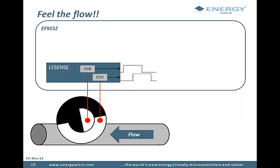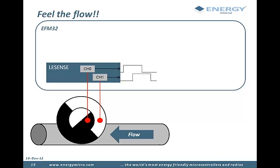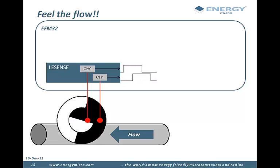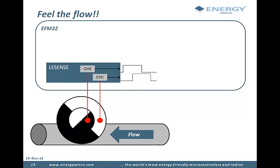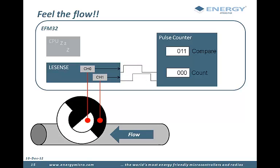The true or false value is then sent out on the peripheral reflex system. In the other end of the PRS channels, the EFM32 pulse counter receives the signal.